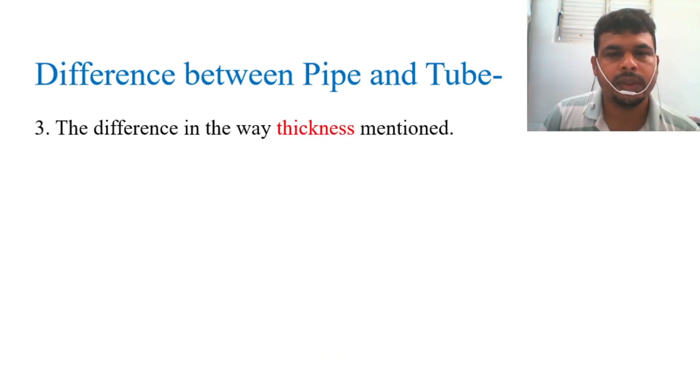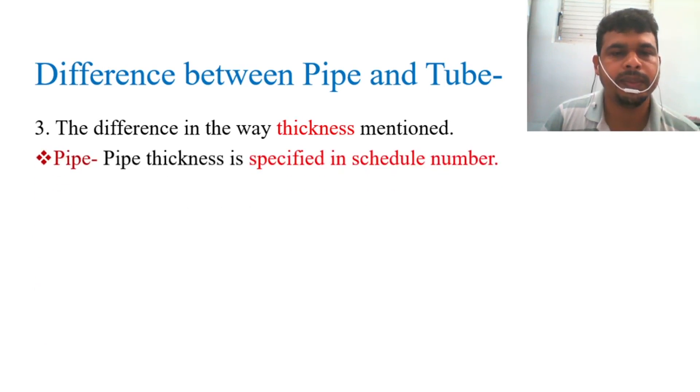Third, the difference in the way thickness is mentioned. Let's see what is the different thickness mentioned. For pipe: pipe thickness is specified in schedule number. This type of number is written on the pipe body, so you will understand from there what is the schedule, that means what is the thickness of the pipe. I will discuss regarding the schedule in one lecture. I will try to explain to you how to find the schedule and how you know the schedule number and what is the thickness from the schedule. In another lecture I will explain the schedule number.